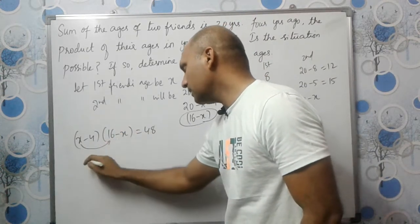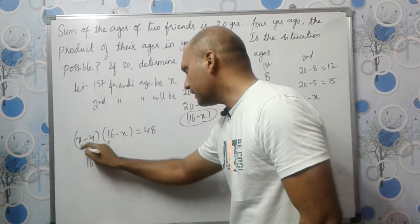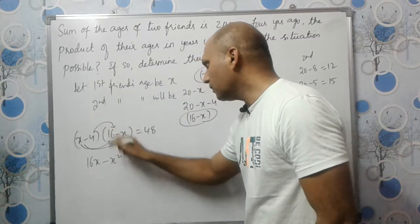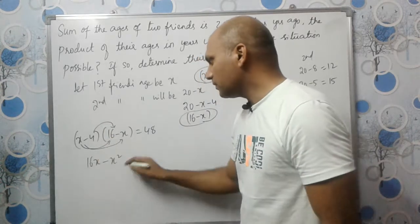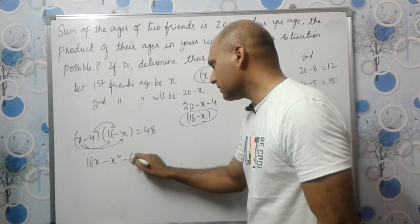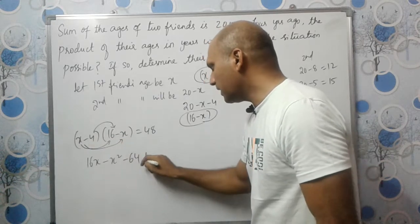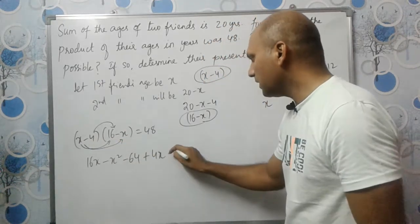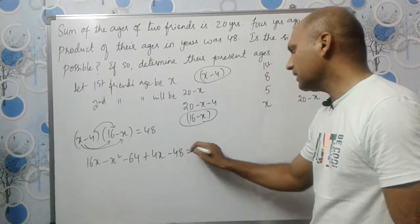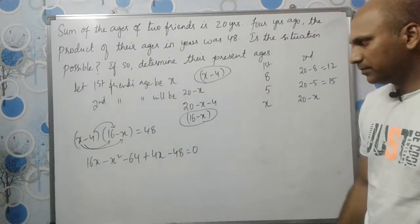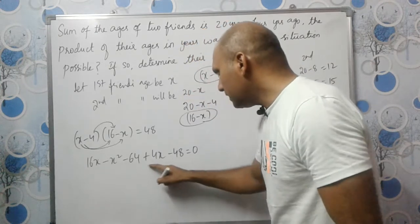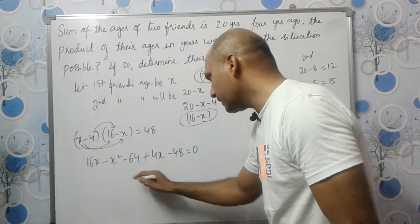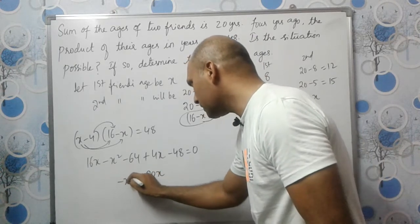Let us expand: X into 16 is 16X, and X into minus X is minus X squared. Then minus 4 into 16 is minus 64, and minus 4 into minus X is plus 4X. So we get minus X squared plus 20X minus 64 equals 48, which gives minus X squared plus 20X minus 64 minus 48 equals 0.